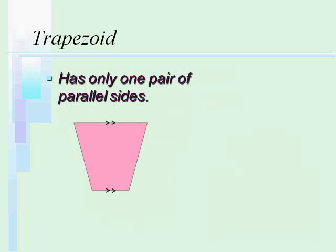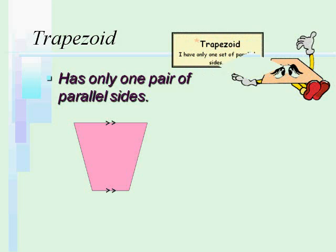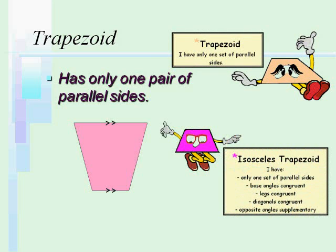Trapezoid, by contrast, has only one pair of parallel sides. So you can have special trapezoids where the unparallel sides happen to be congruent. So that would be called an isosceles trapezoid. But the only requirement to be a trapezoid is that one pair of parallel sides.